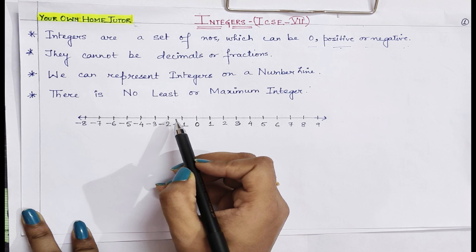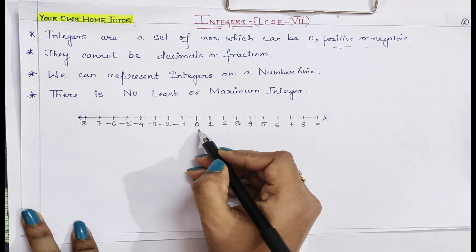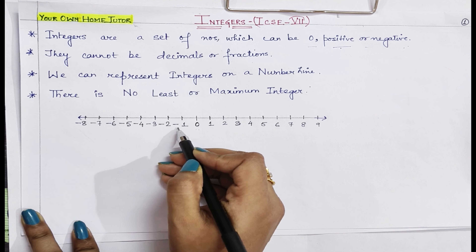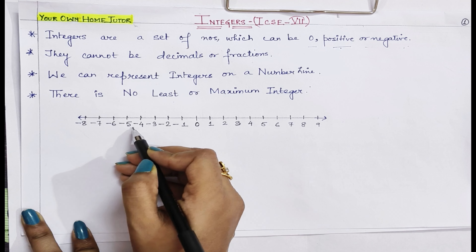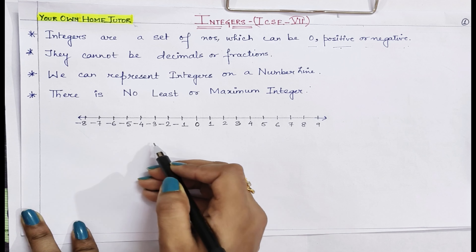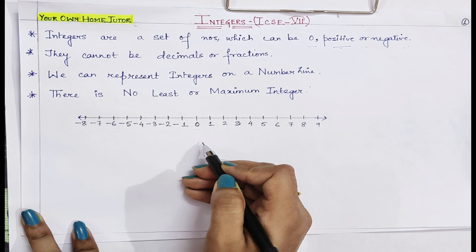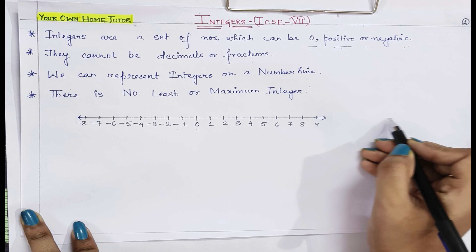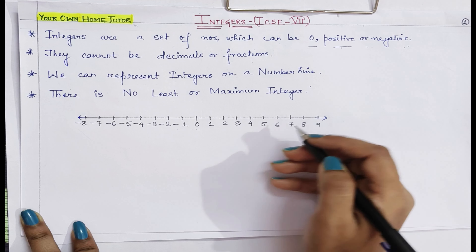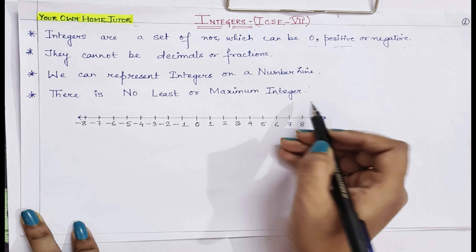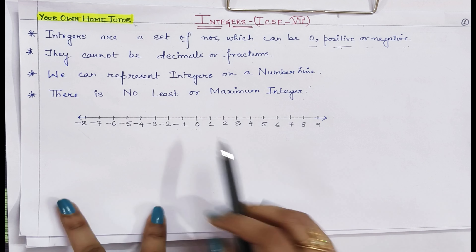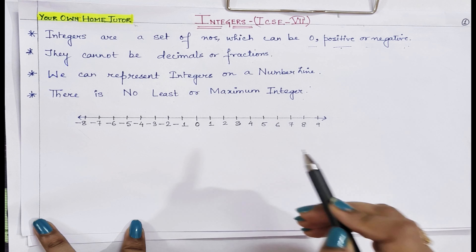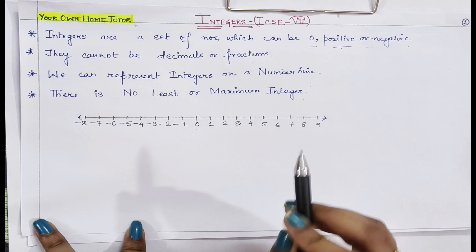There is no least or maximum integer which we can specify. If you say 0 is the least, that is not correct. Less than 0, we have minus 1, minus 2, minus 3, and so on. So we cannot say 0 is the least. And moving in the positive direction even after 9, we can say there is no maximum integer.